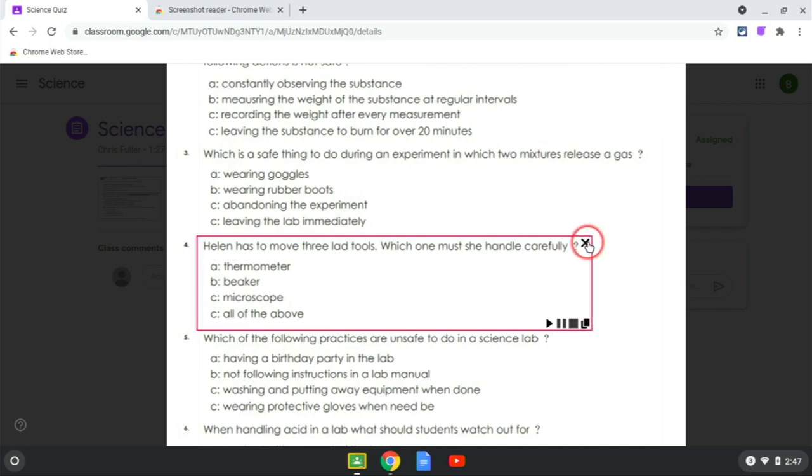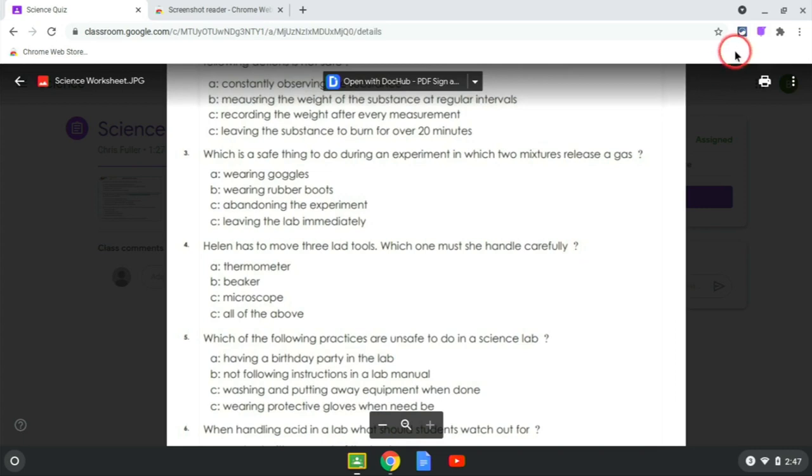To close Screenshot Reader, just click on the X in the top right corner of the box. When you're ready to make a new selection, click on the Screenshot Reader icon again and select your next block of text.